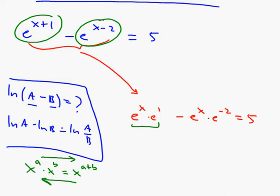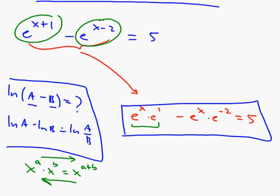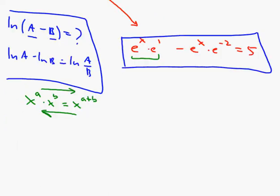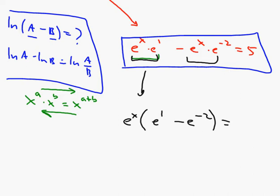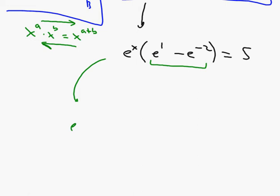The common factor on the left is e to the x. Take out e to the x — to get the first term you need e to the 1, and to get the second term you need minus e to the negative 2 — equals 5. That expression in the brackets is just a number; e is about 2.7, so this is about 2.7 minus 1 over 2.7 squared. I don't want it there, so I'm going to divide by it. I get e to the x equals 5 over e minus e to the negative 2 (or 1 over e squared).